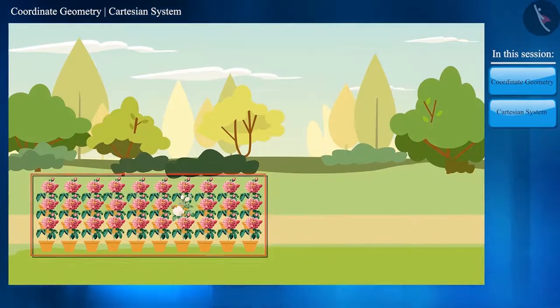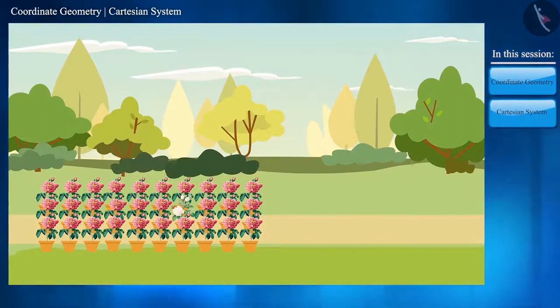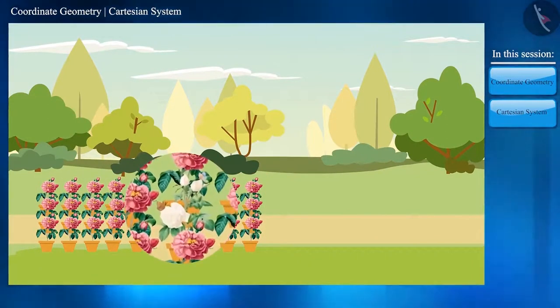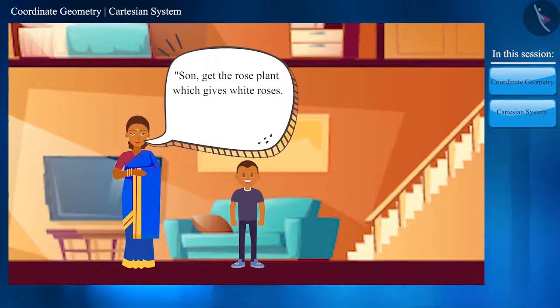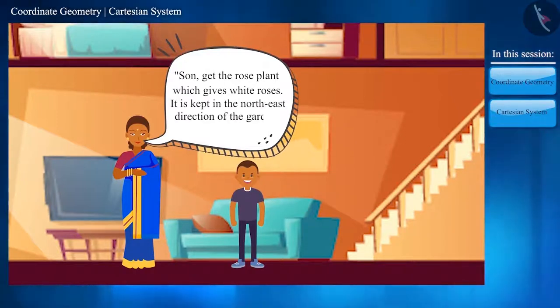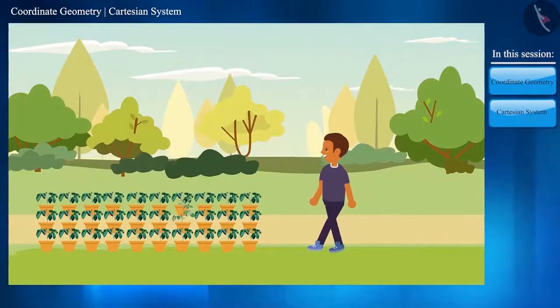In a field many plants were planted, of which there was only one plant which had white roses on it. Rahul's mother asked him to get the same plant with white flowers. She added that it is kept in the northeast direction of the garden.